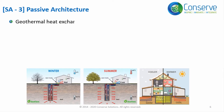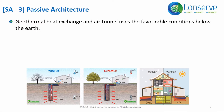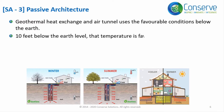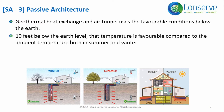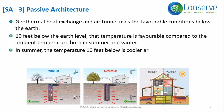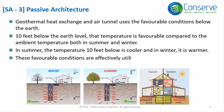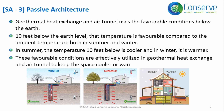Geothermal heat exchange and earth tunnel use the favorable conditions below the earth. If you go 10 feet below the earth level, the temperature is favorable compared to the ambient temperature both in summer and winter. In summer, the temperature 10 feet below is cooler, and in winter it is warmer. These conditions are effectively utilized to keep spaces cooler or warmer.